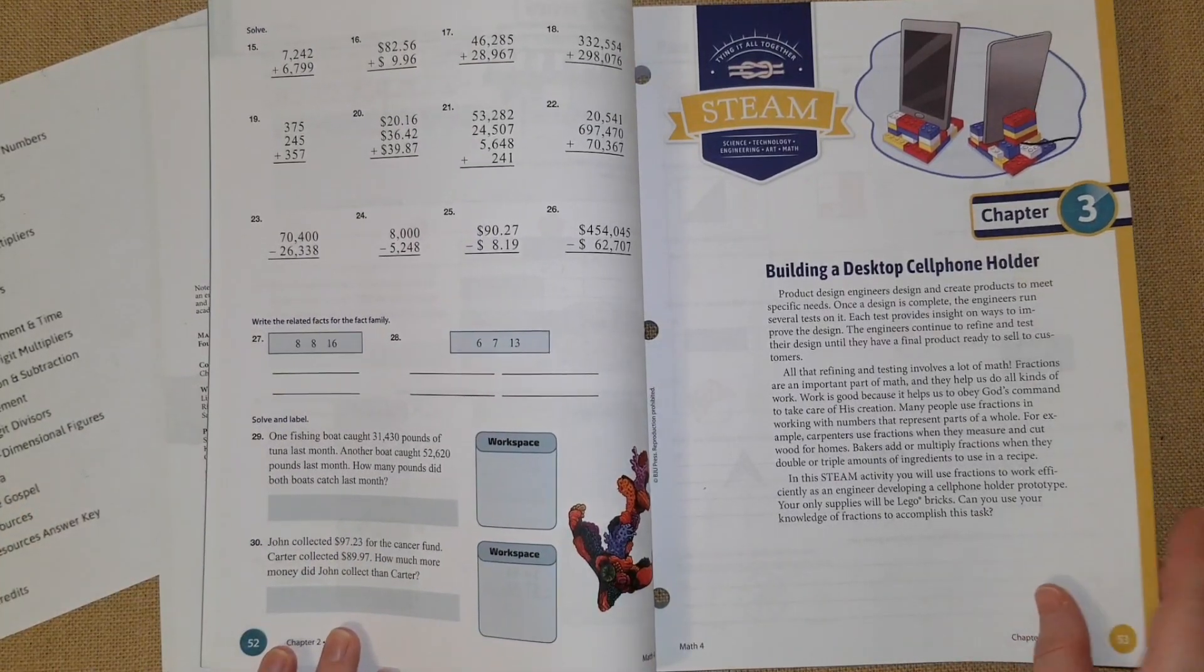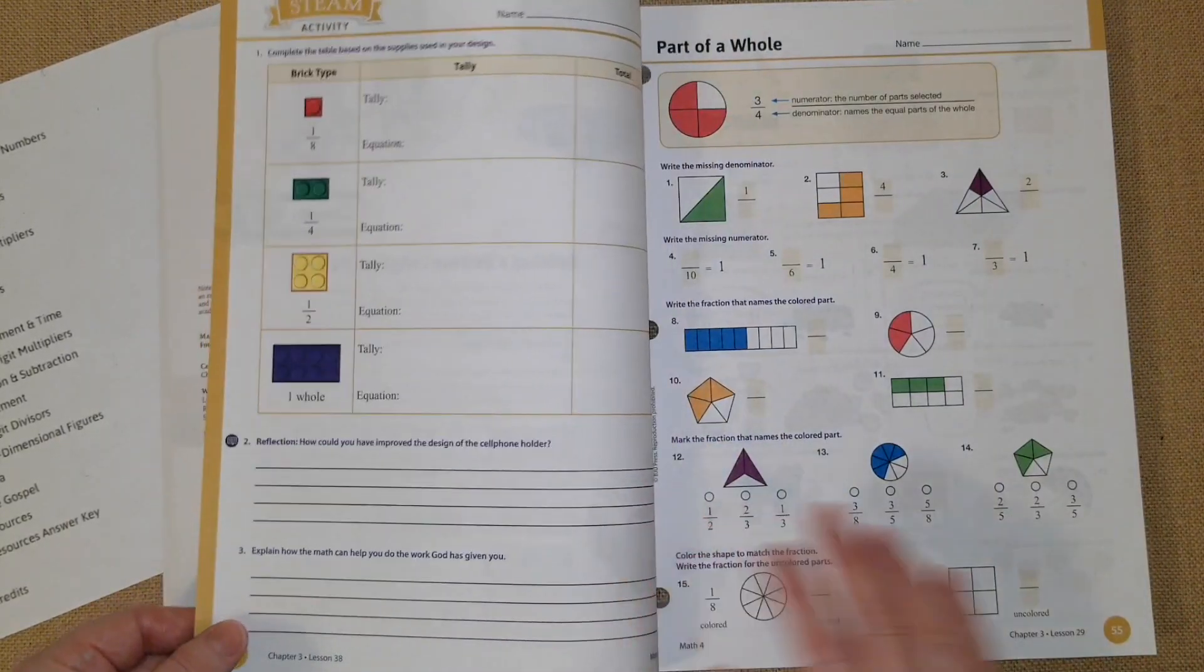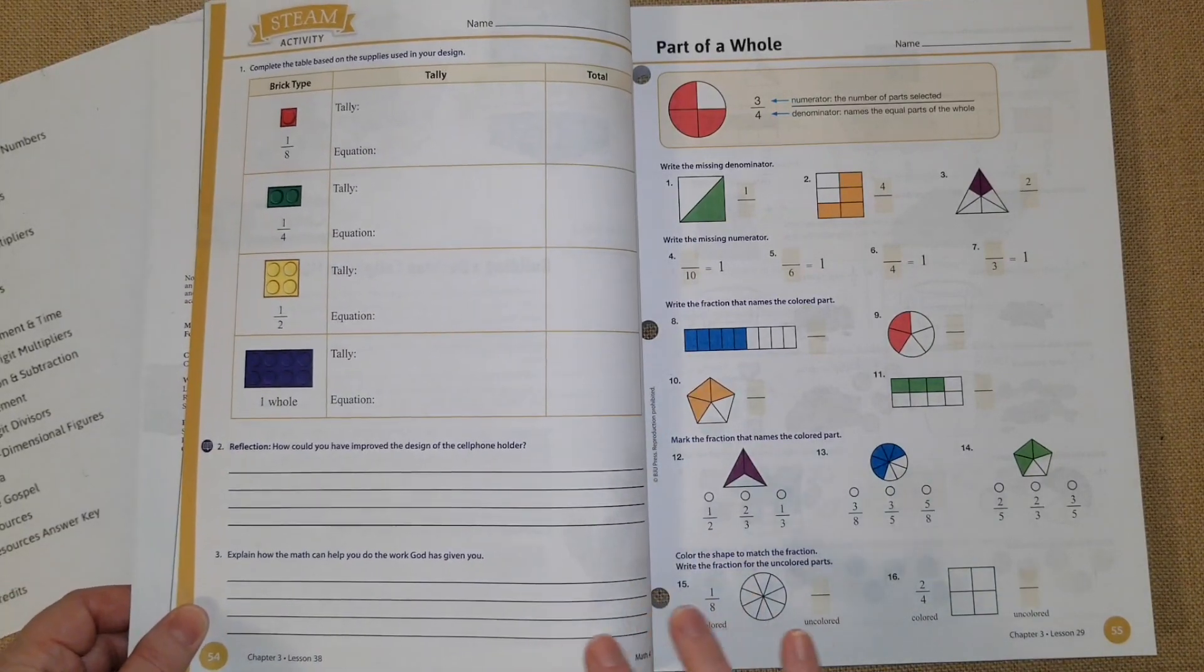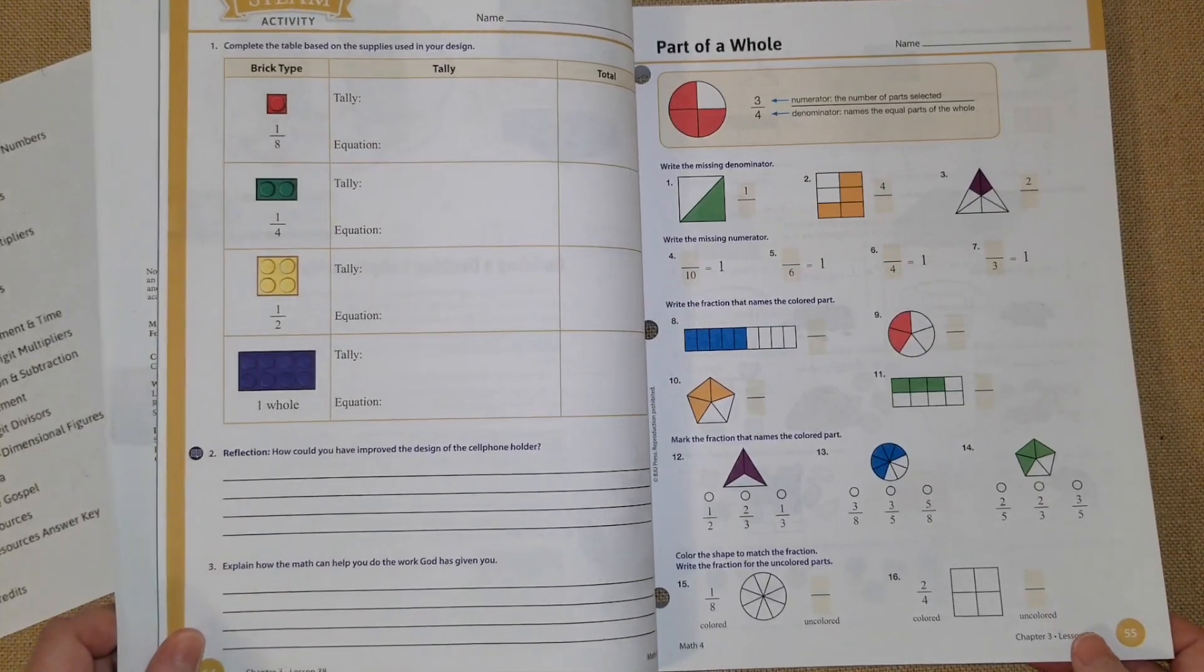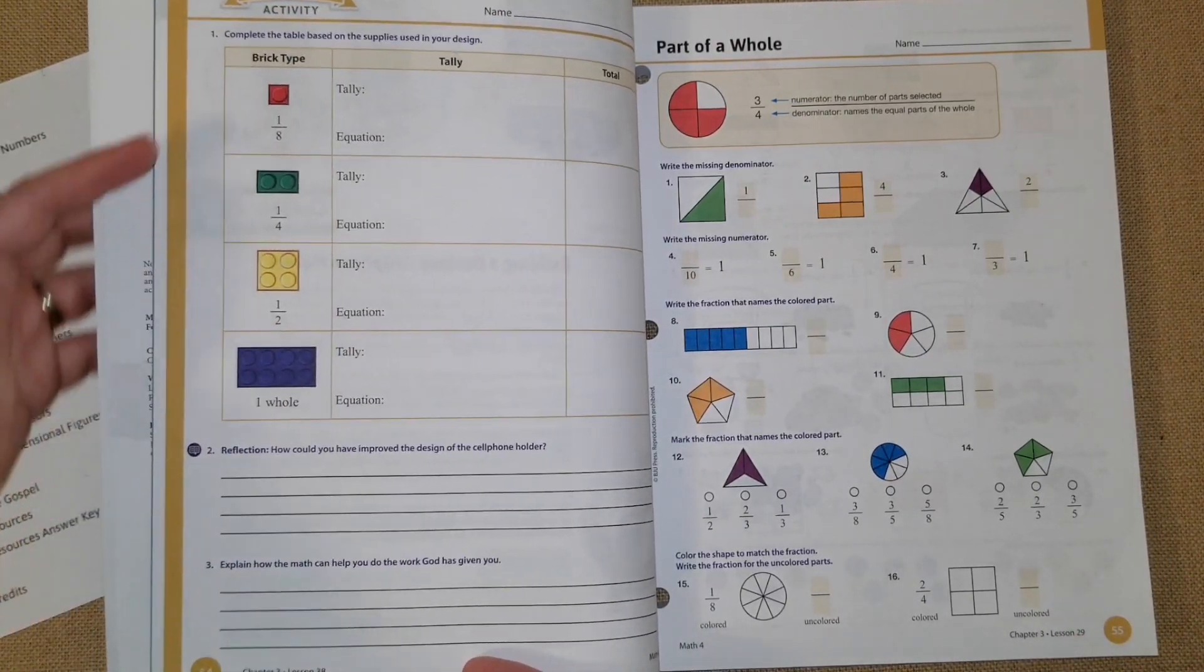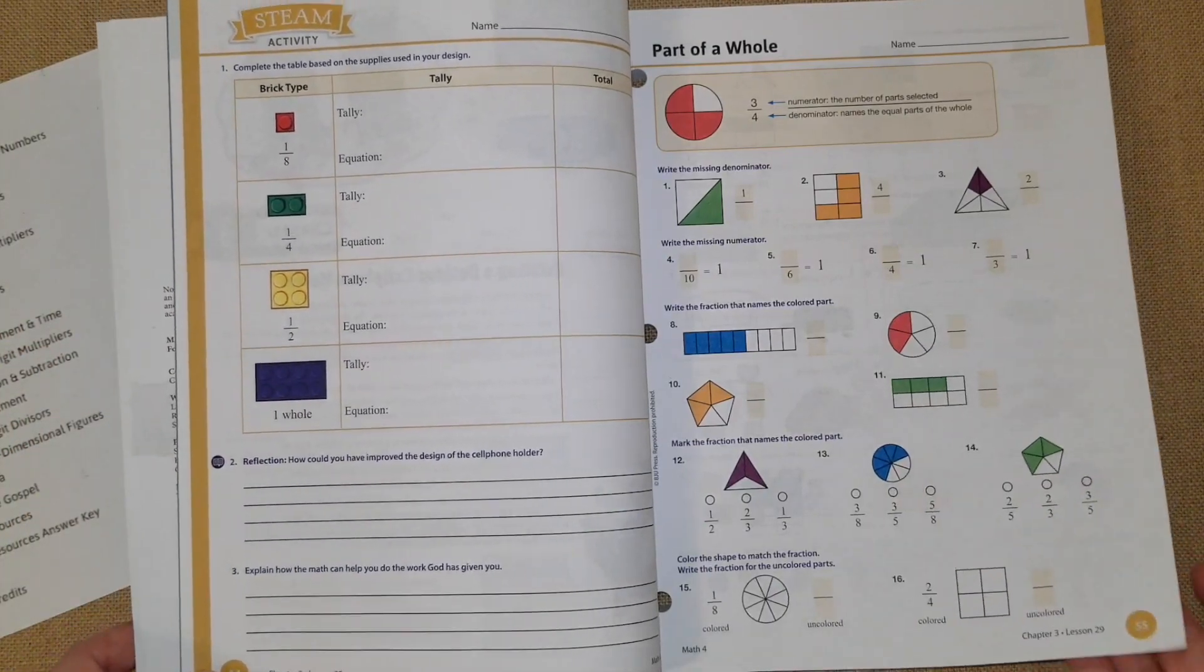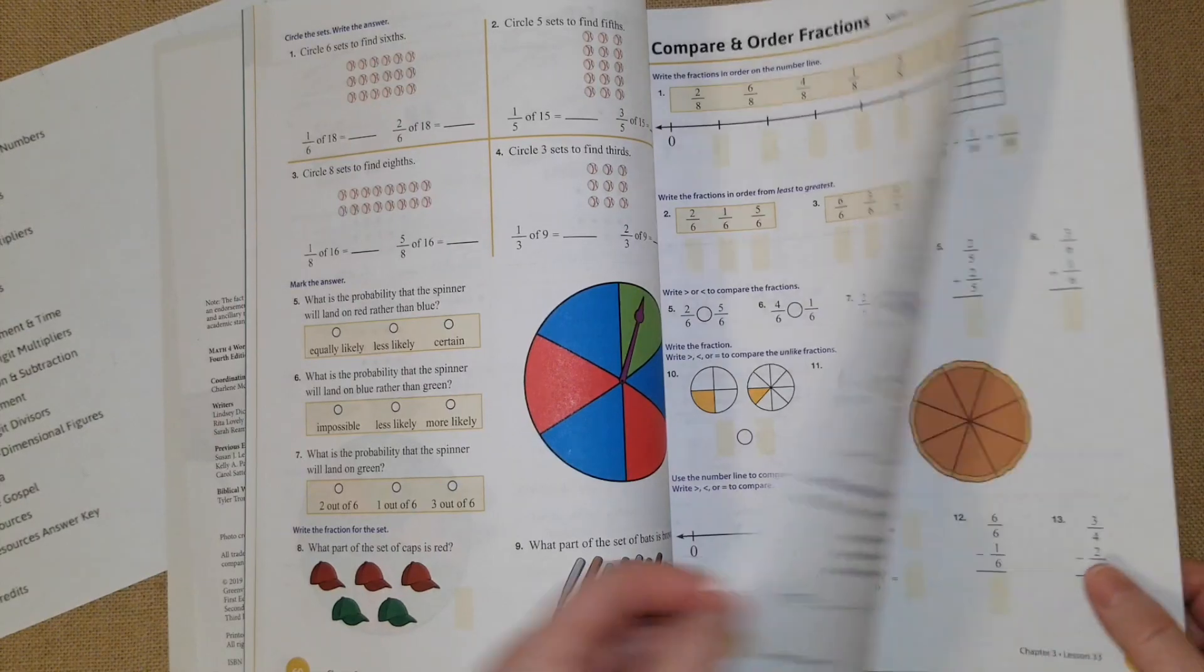Third chapter is fractions. The STEAM project is building a desktop cell phone holder with Legos. That is so cool. They give you a tally graph sheet to do it, and it's really neat because it gives you examples of fractions: one-eighth, one-fourth, one over two, half, and then a whole. They're going to be doing the number line, which I like. I love all the visuals because I'm a visual learner.